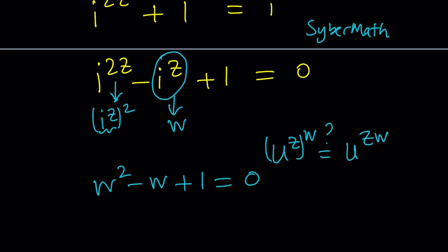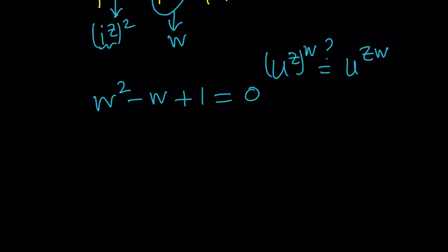Now, we have a quadratic equation which should be fairly easy to solve. This is not easily factorable, so I'm going to use the quadratic formula. The quadratic formula says negative b, 1, plus minus the square root of b squared, which is 1, minus 4ac, which is 4. 1 minus 4 is negative 3. Square root of negative 3 can be written as root 3i. And then we're going to divide it by 2a, which is 2.